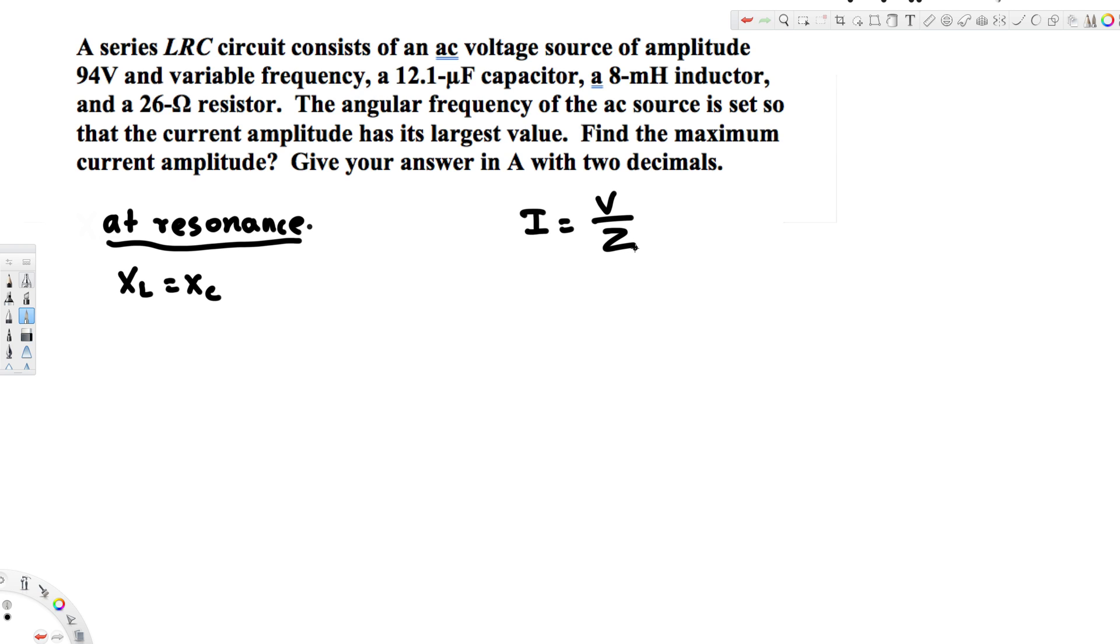If you look at the impedance equation, impedance is the square root of R squared plus (XL minus XC) whole squared. If these two are equal, this value is going to be zero because this minus this is zero. Zero squared is still zero.